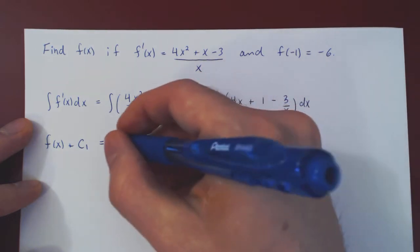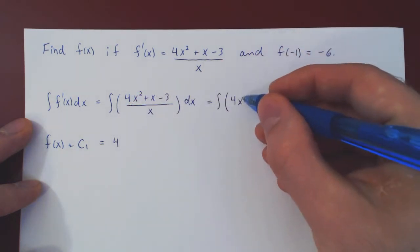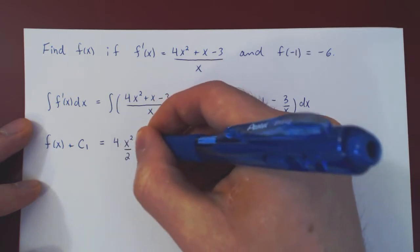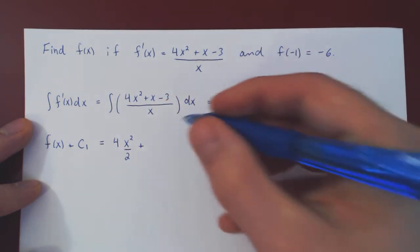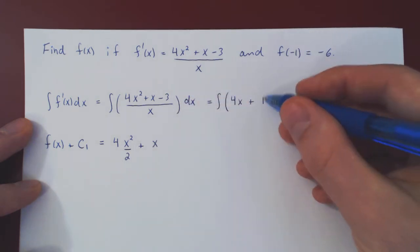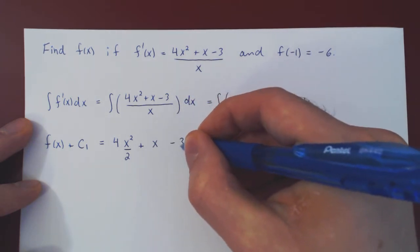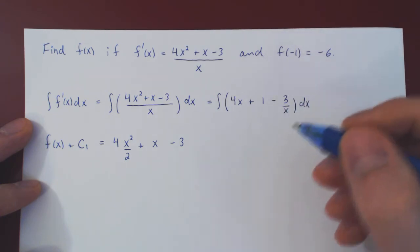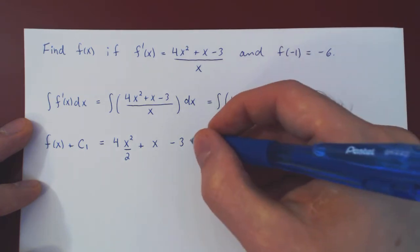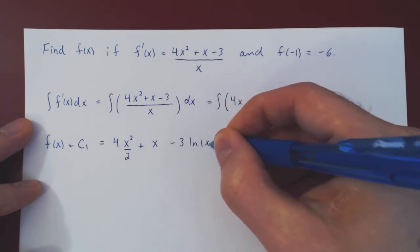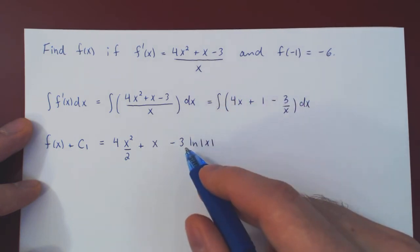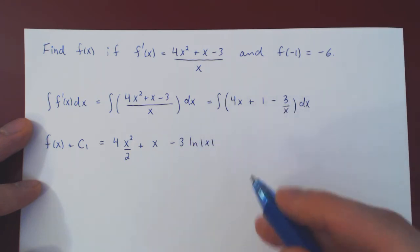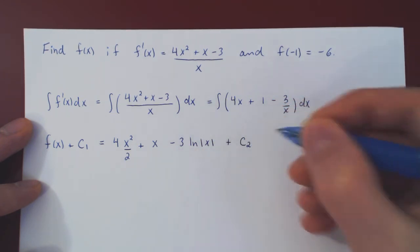So 4 is a constant multiple, it stays there. Power rule on x, x² over 2, plus, well, the integral of 1 is simply x, as the derivative of x is 1, minus 3, as it is a constant multiple. That leaves you with 1 over x. And if you recall, 1 over x integrates to the ln of |x|, as the derivative of ln|x| is 1 over x. Plus, of course, another arbitrary constant.